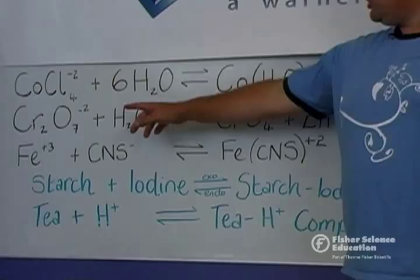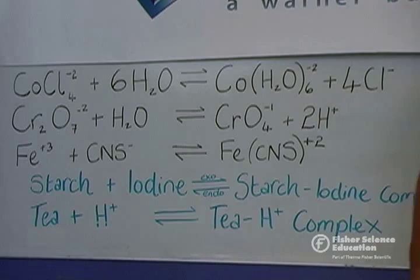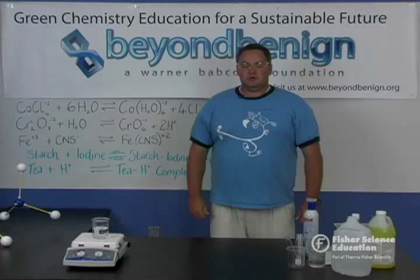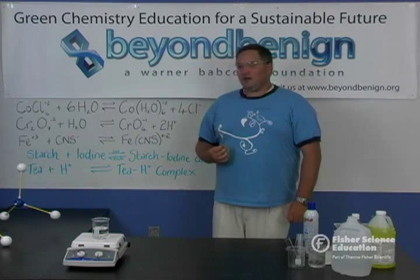Two other reactions also commonly used because of their color changes are: reacting the orange dichromate ion with water to produce the yellow chromate ion and hydrogen ions, or reacting the iron ion with thiocyanate to produce the iron thiocyanate complex. These three reactions are all used because of their color changes and their ability to demonstrate Le Chatelier's Principle and Dynamic Equilibriums.